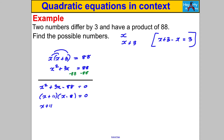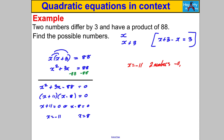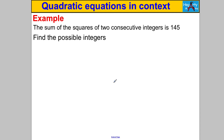So either X + 11 = 0 giving X = −11, or X − 8 = 0 giving X = 8. Since the question just says 'two numbers' without specifying positive or negative, both solutions are valid. When X = −11, the two numbers are −11 and −8 — their difference is 3 and their product is 88. When X = 8, the two numbers are 8 and 11 — they also differ by 3 and have a product of 88. So there are two sets of answers.